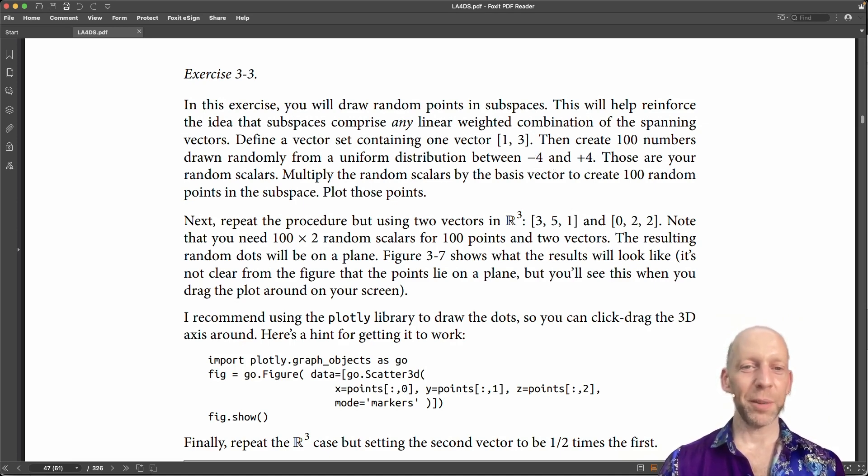Let me take a step back. We are going to define a vector set, and that vector set contains only one vector. It's the vector 1, 3. And now what we are going to do is plot points that are randomly chosen on the subspace that is defined by the basis vector 1, 3.